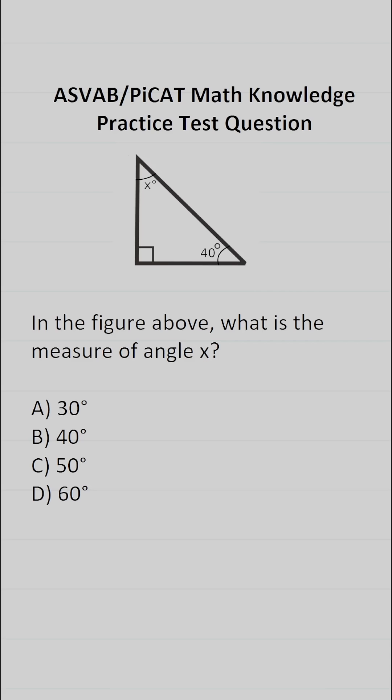So we have a triangle, and you should know that all the angles in a triangle add up to 180 degrees. That's called the triangle sum theorem. In other words, angle 1 plus angle 2 plus angle 3 add up to 180 degrees.